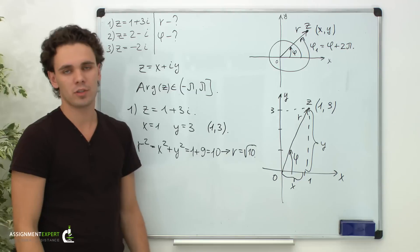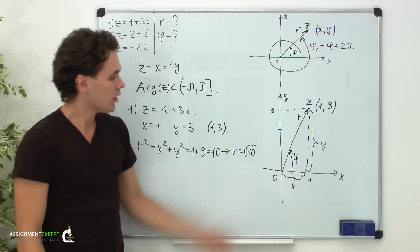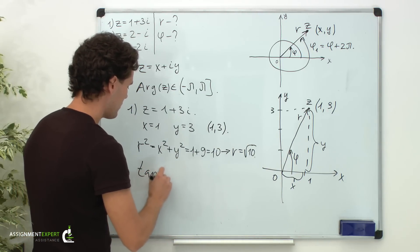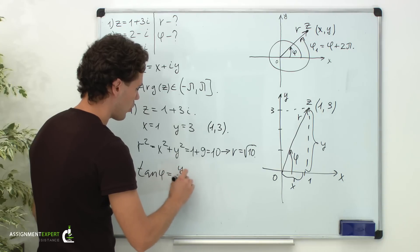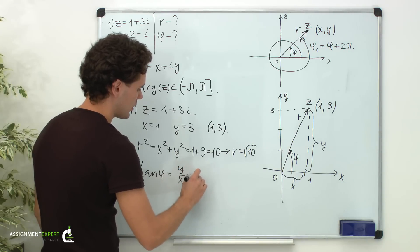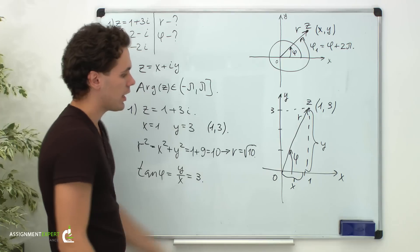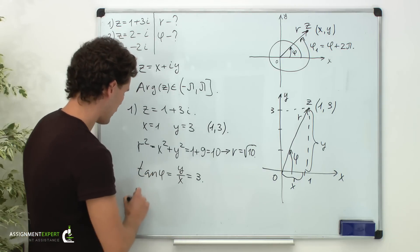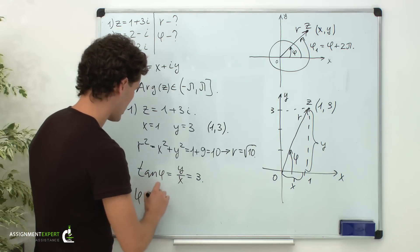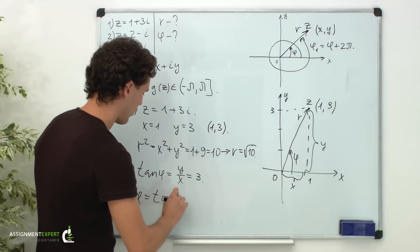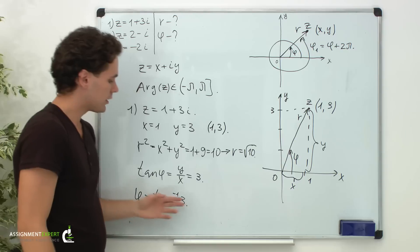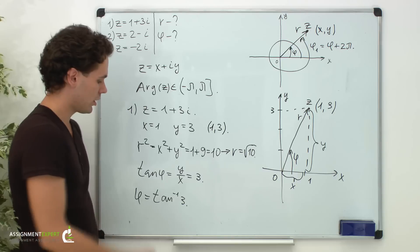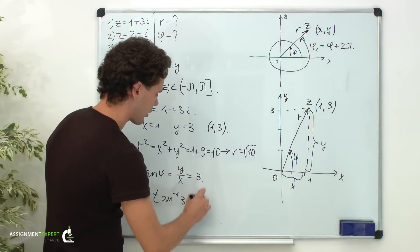Now let's find the argument of this complex number. From the same triangle, the tangent of angle phi equals y over x, which in our case equals 3. As we can see, phi is an acute angle, therefore phi equals the inverse tangent of 3. This value is inside the interval and phi is an acute angle, therefore this is the principal argument of z.